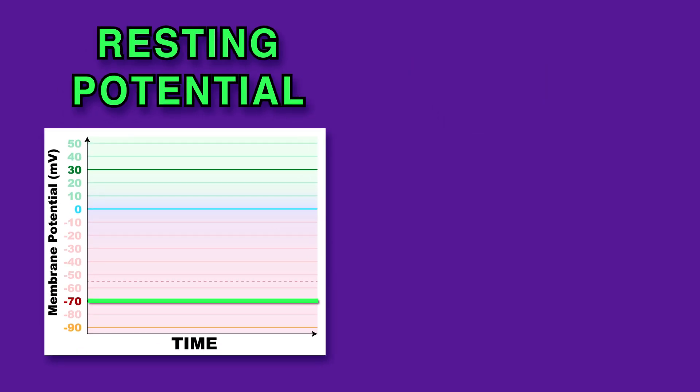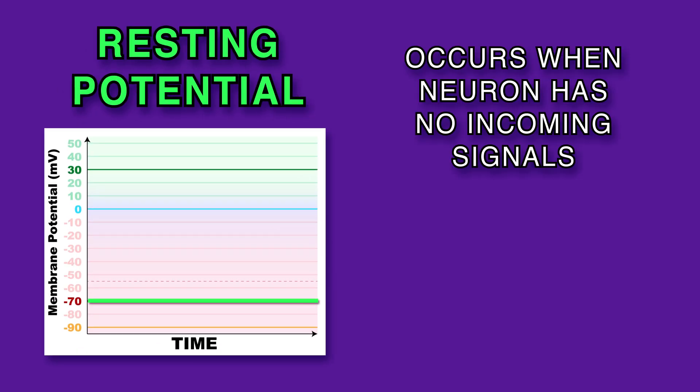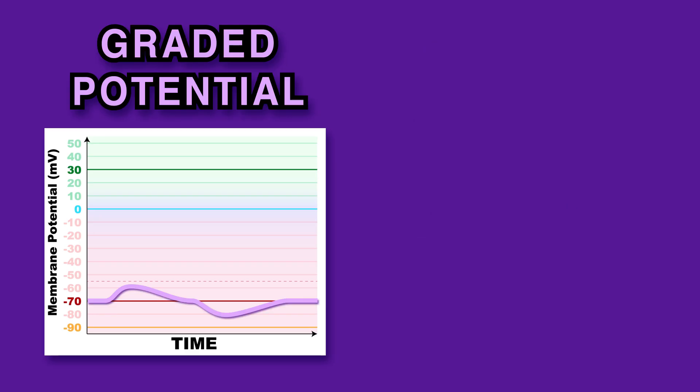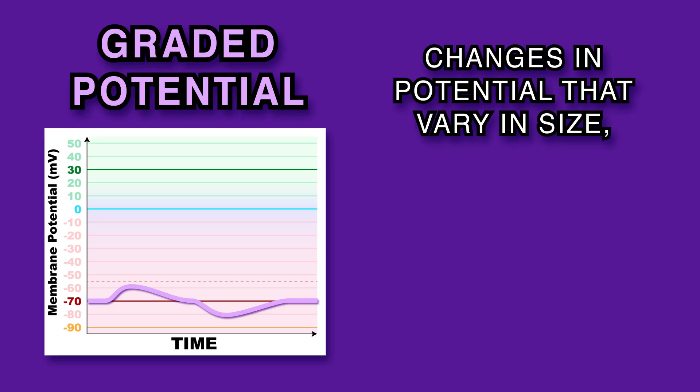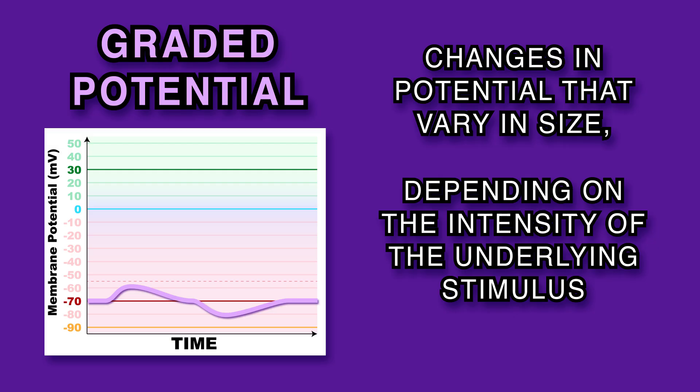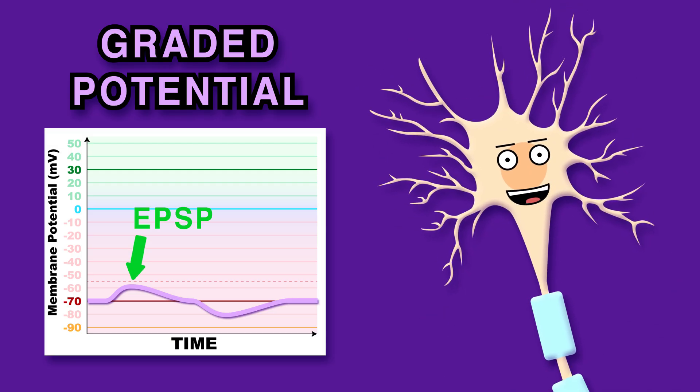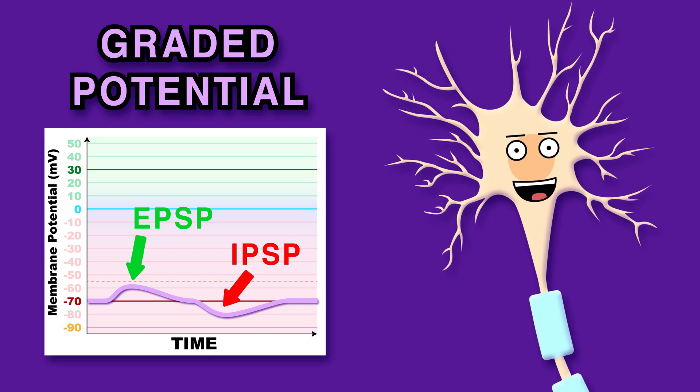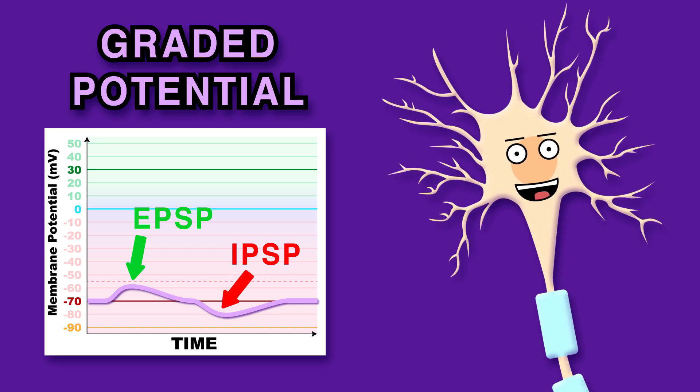The membrane's resting potential, when no signals are obtained, is minus 70 millivolts, at which it is maintained. Graded potentials are changes in potential that vary in size, depending on the intensity of the stimulus that underlies. EPSPs are increases to membrane potential, while IPSPs are decreases to membrane potential.